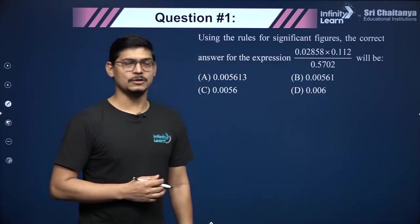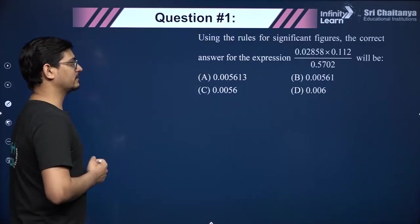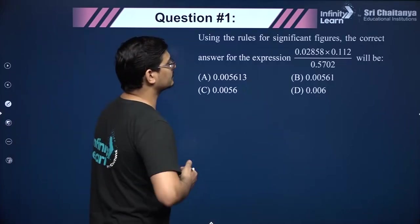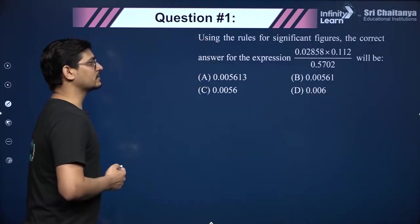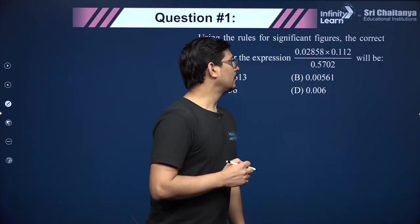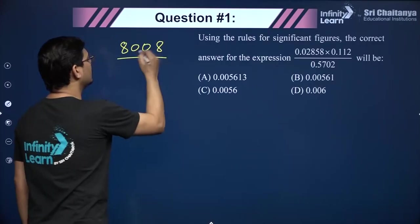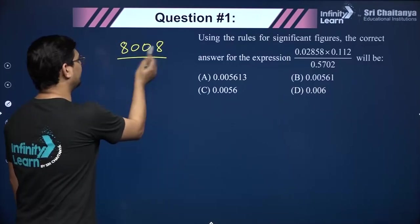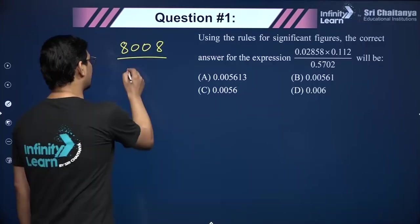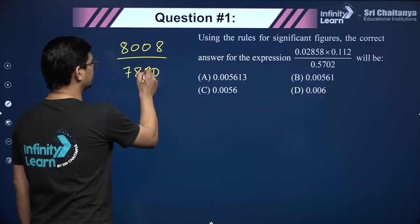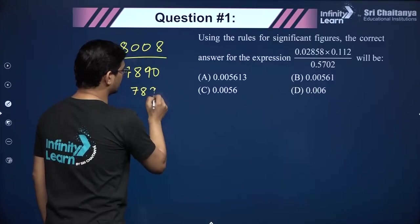Using the rules for significant figures — significant figures is something that both JEE Main and JEE Advanced have been asking questions on almost every year in chemistry as well as physics. The rules: all non-zero digits are significant. Zeros are only significant if they are between two non-zero digits — for example, in 8008, those two zeros are significant because they are flanked by non-zero digits.